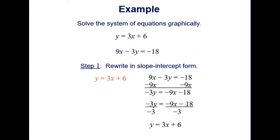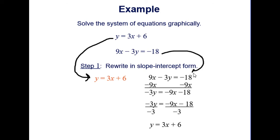Let's look at one more example. The first step is to rewrite in slope-intercept form. The first equation already is: y equals 3x plus 6. The second equation is not, so we subtract 9x, giving negative 3y equals negative 9x minus 18, then divide everything by negative 3, making it y equals 3x plus 6.